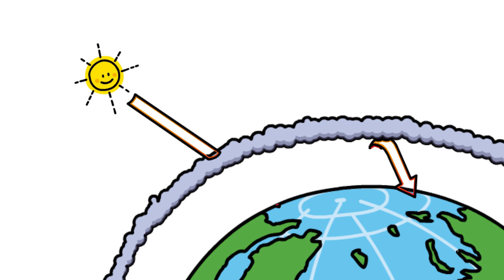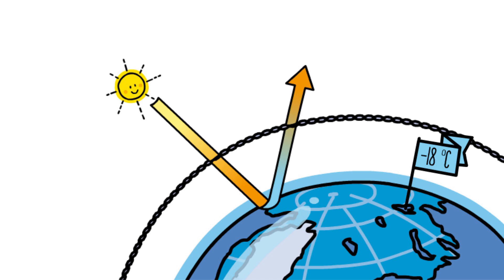If the atmosphere did not catch any of these rays that bounce off the surface, the average temperature of the Earth would be minus 18 degrees Celsius.